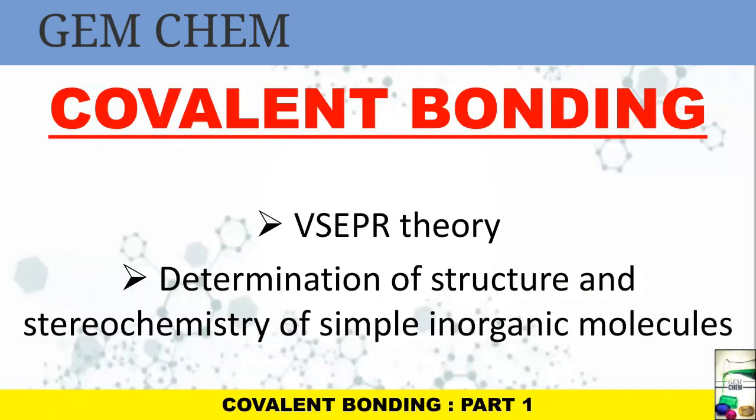Hi everyone, welcome to JemKim. Today's video is on covalent bonding part 1, and here we are going to deal with VSEPR theory and determination of structure and stereochemistry of simple inorganic molecules. Now before starting, the first part of covalent bonding is Lewis structure. I will not deal with it, but I will give the PDF of the book on Lewis structure in the description box — check it out. If you have any doubt you can ask me in the comment box.